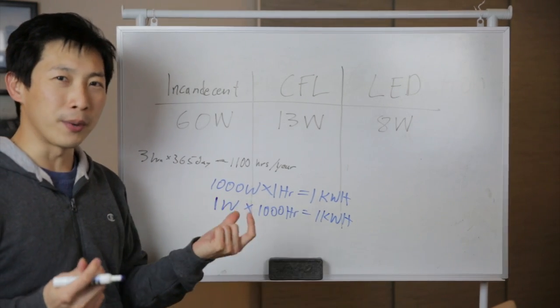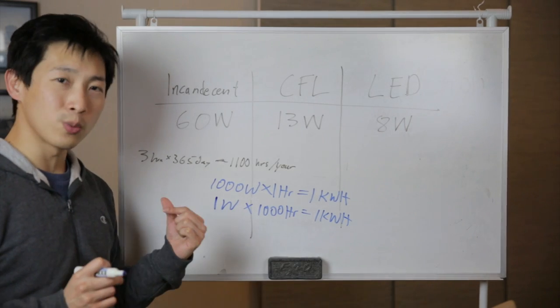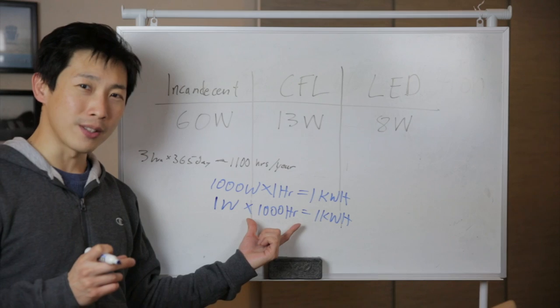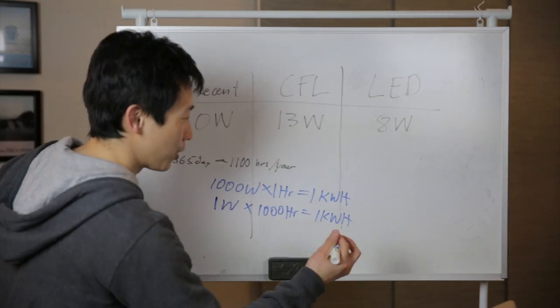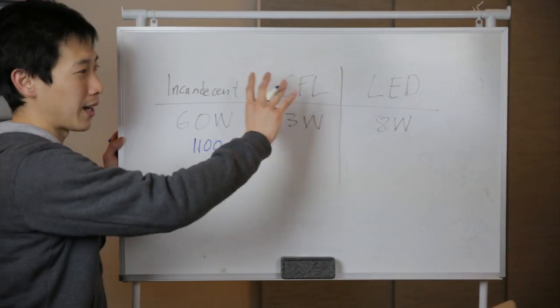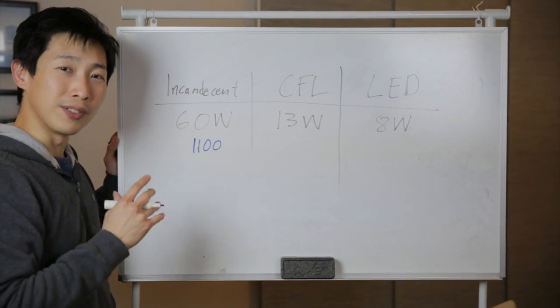Now if you have a light bulb, let's say it's very tiny, it only uses 1 watt, like a little night light, and you run that for 1000 hours, that's also 1 kilowatt hour. And that would also cost you 11 cents. So we have all these light bulbs that output the same amount of light.